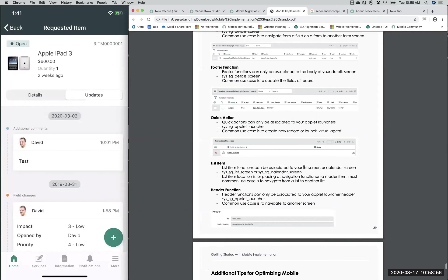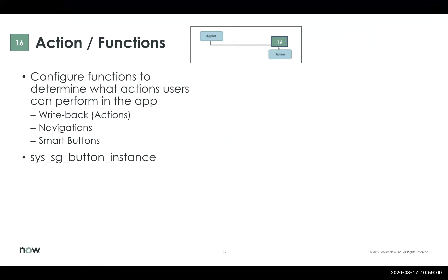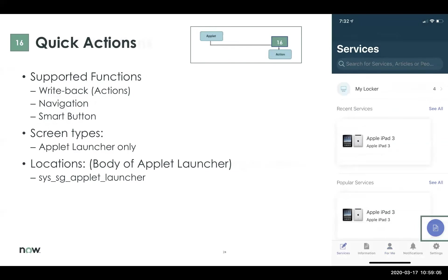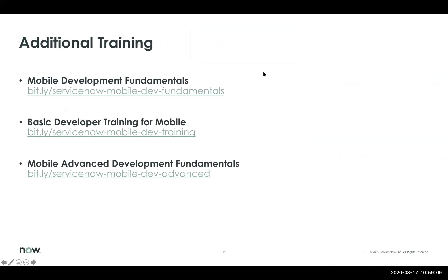That kind of wraps up all the things I wanted to go over today. We did run out of time, but hopefully with all the visualizations and walkthrough on the backend, we now have a better understanding of how to navigate and configure outside of Mobile Studio. Getting comfortable with the platform UI is extremely important when troubleshooting — there are many times you might run into a Mobile Studio bug or realize a configuration isn't supported inside of Mobile Studio but rather configured on the Now platform itself.